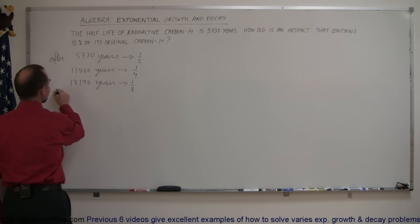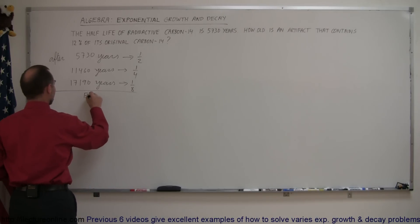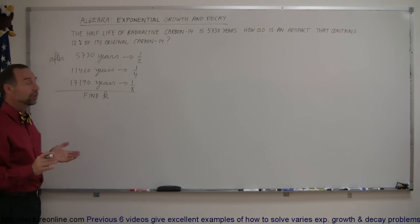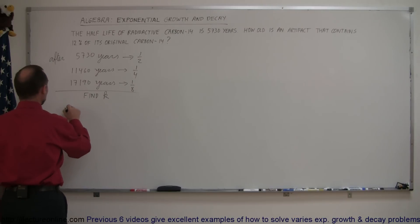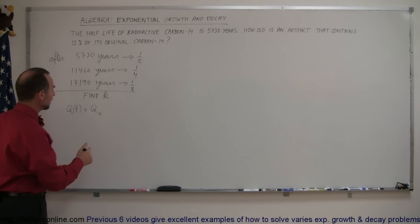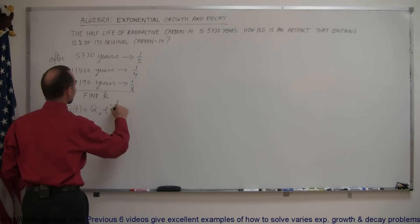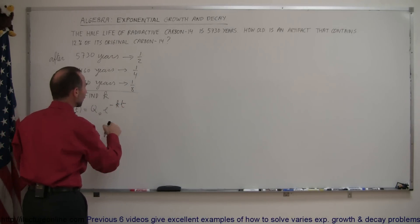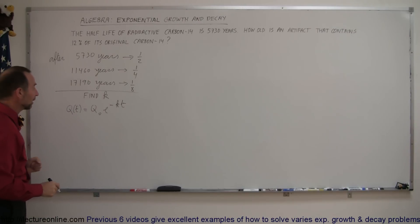So let's give ourselves some room here. We first find k. To do that, we need the exponential decay equation, so the quantity that we have as a function of time is equal to the original quantity, times e to the minus kt. I use a minus because we know it's a decay, it's diminishing in the amount.